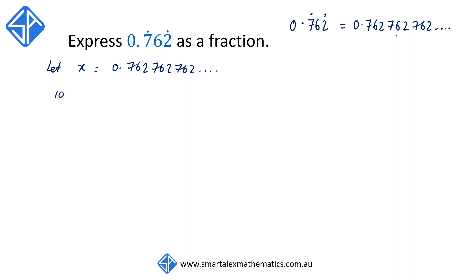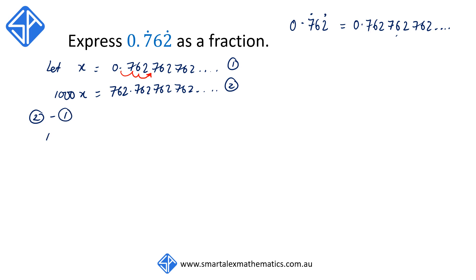Starting off the same way, let x equal to 0.762762762. This time we're going to multiply x by 1000, so that we've got 1000x is equal to — remember, multiplying by 1000 is the same as moving the decimal point 3 places to the right — so we have 762.762762762. Calling them equations 1 and 2, from equation 2 we're going to subtract equation 1, so 1000x take away x is equal to 999x.